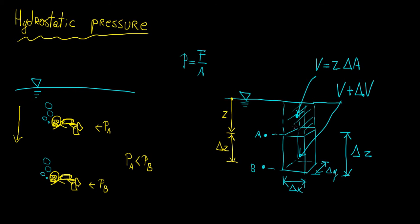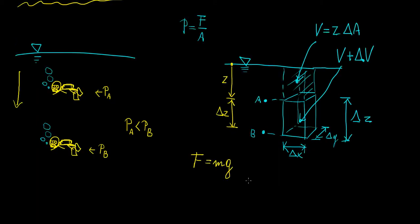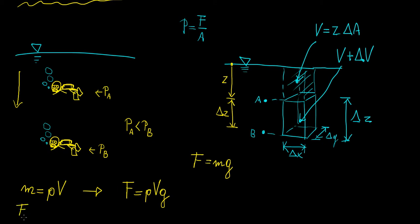Now we want to know the forces at each point. The forces are related to mass and gravity: force equals mass times gravity. To find the mass, we find the mass of water above each point, which requires the density: mass equals density times volume. So the force as a function of fluid density is rho times V times g. The force at A is the total weight of water above point A, which is simply rho g times z delta A — or equivalently, gamma times z delta A, where gamma is the specific weight of the fluid.